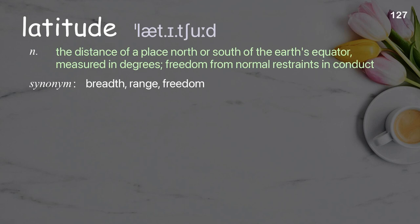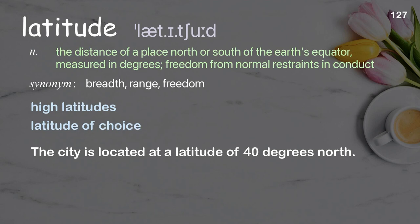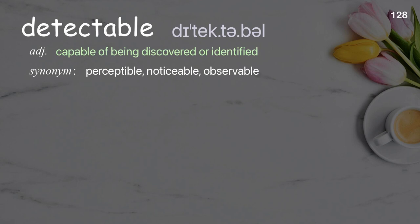Latitude: the distance of a place north or south of the Earth's equator, measured in degrees; freedom from normal restraints in conduct. Examples: high latitudes; latitude of choice; the city is located at a latitude of 40 degrees north.